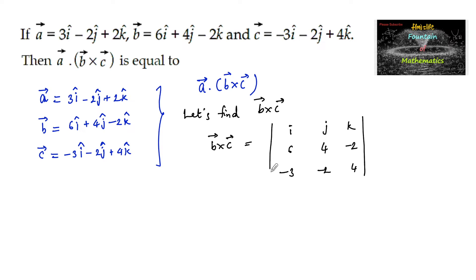Let us find the determinant, which is equal to i times 16 minus 4, minus j times 24 minus 6, plus k times minus 12 plus 12.